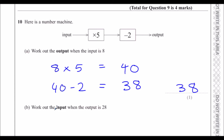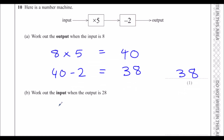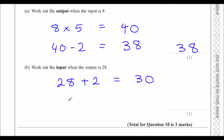Work out the input when the output is 28. The output is 28, so we go backwards: the opposite of subtracting 2 is adding 2, giving 30, then the opposite of multiplying by 5 is dividing by 5, and that gives 6.